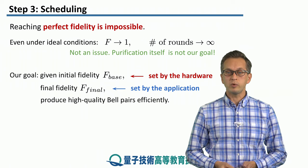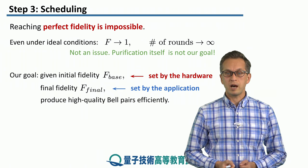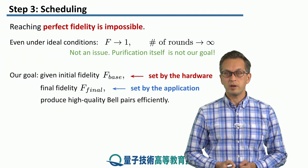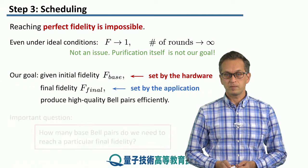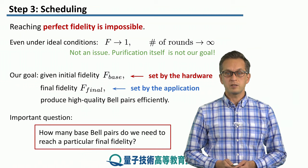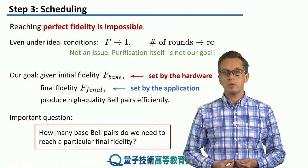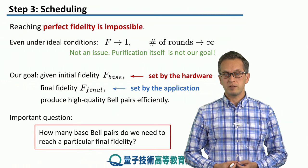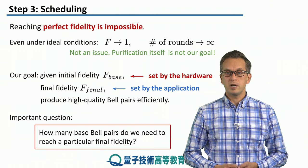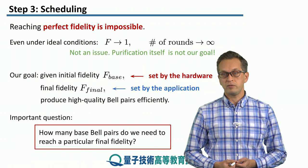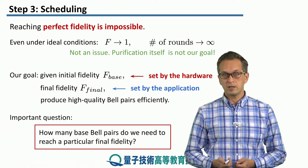Furthermore, we want to produce high quality Bell pairs efficiently. So the important question is: how many base Bell pairs do we need in order to reach a particular final fidelity? This is what this step is about.